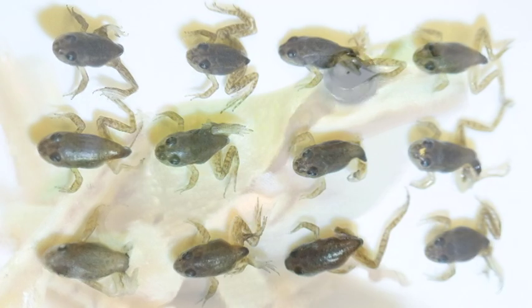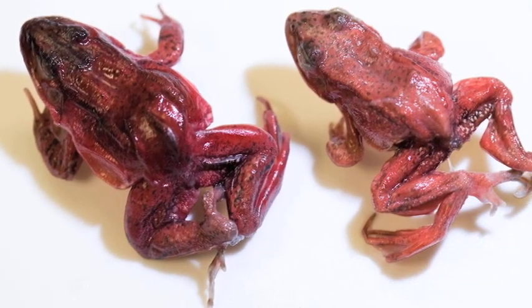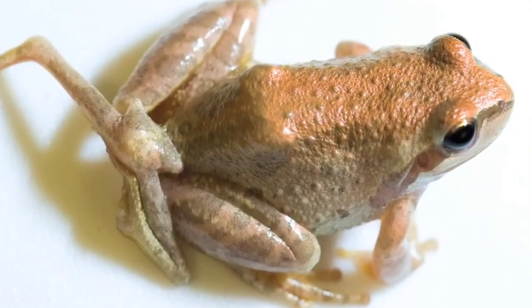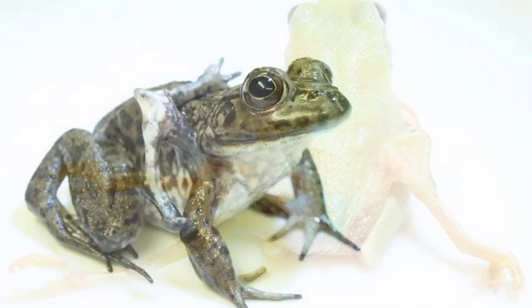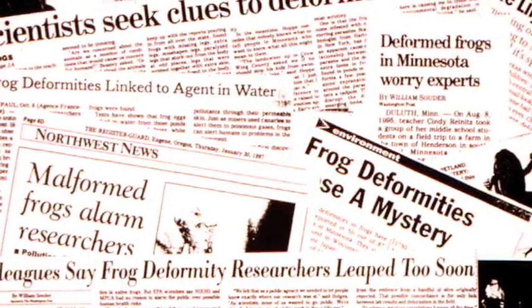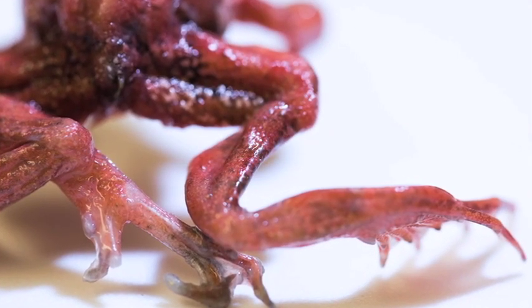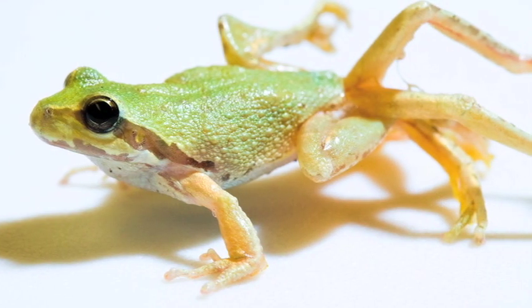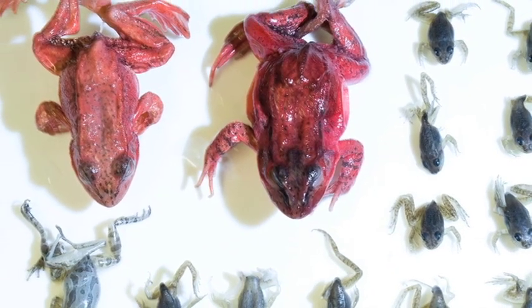A local landowner came to the biology department at Stanford reporting malformed frogs on his property. In some ponds, more than 25 percent of emerging frogs showed really wicked deformities. This had become a huge national issue, and there was a lot of interest in what was causing these deformed frogs — an environmental murder mystery, if you will. Why were these frogs showing up with malformations, and what did this mean for amphibian population persistence?